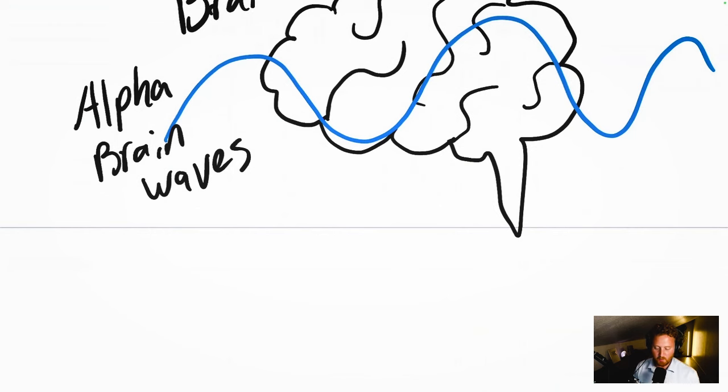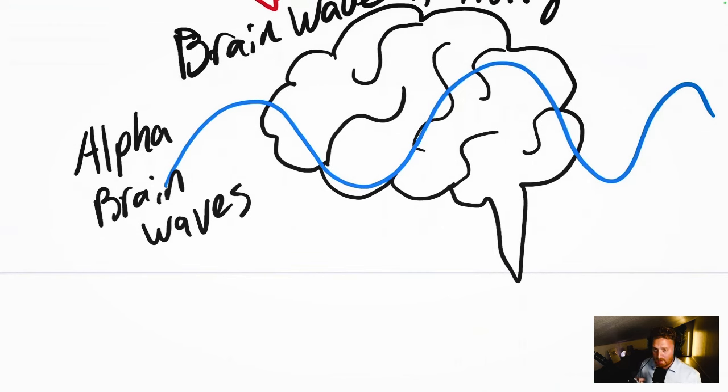Now, what are alpha brainwaves? Alpha brainwaves are the brainwaves that put us in that very relaxed state. I already told you, L-theanine puts us in that relaxed state, but not sedative. And so this is very important because why is it important to be in an alpha brainwave state?